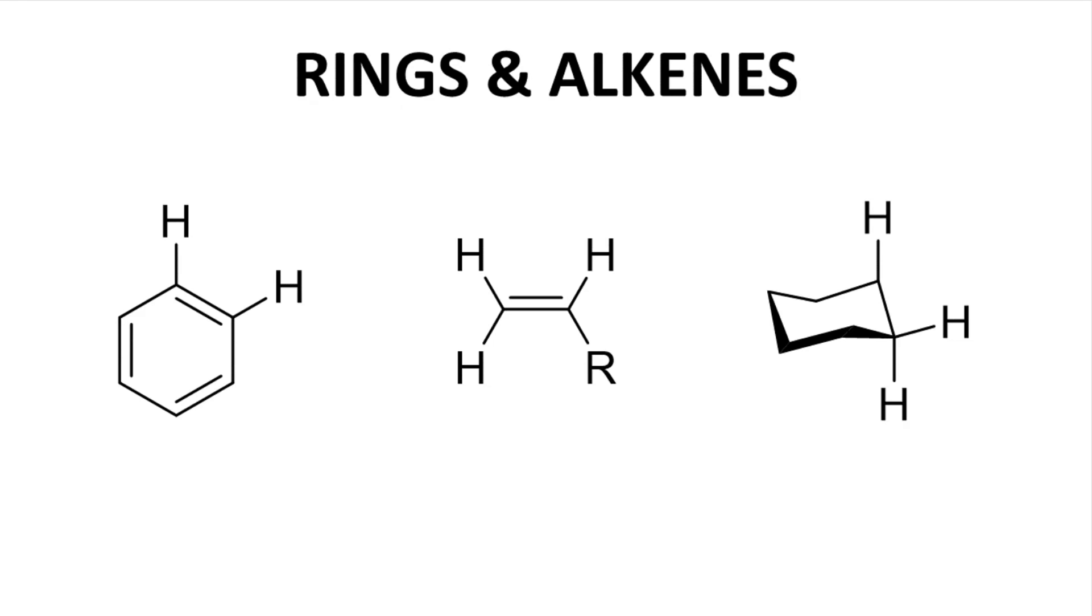For neighboring hydrogens on an aromatic ring, the dihedral angle is fixed near zero degrees, and a typical J value for these two hydrogens would be 8 hertz.